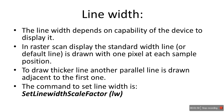To draw a thicker line, another parallel line is drawn adjacent to the first one. If you want to make the line even thicker, you just add one more adjacent parallel line, and so on. The command to set line width is set line width scale factor, and in brackets you specify the line width — the factor must be greater than zero.